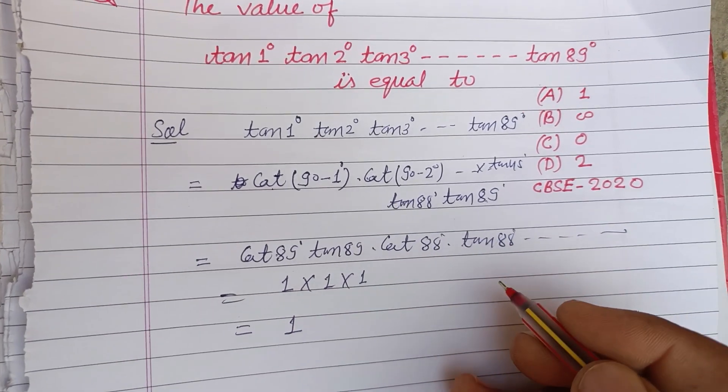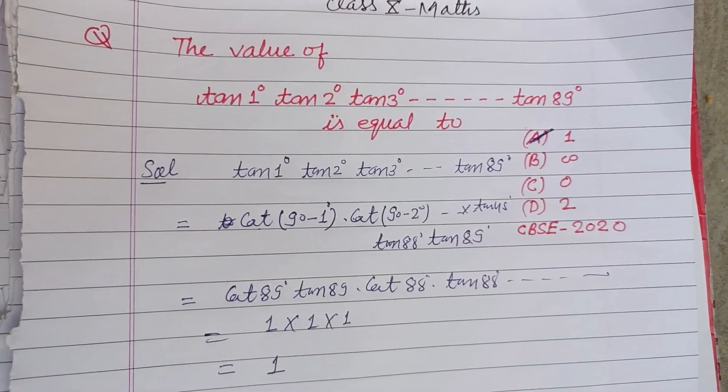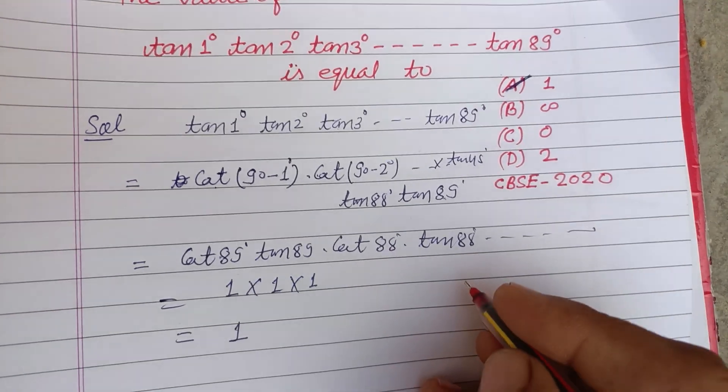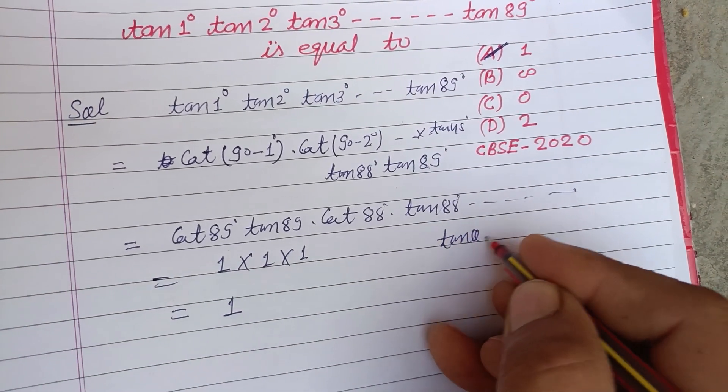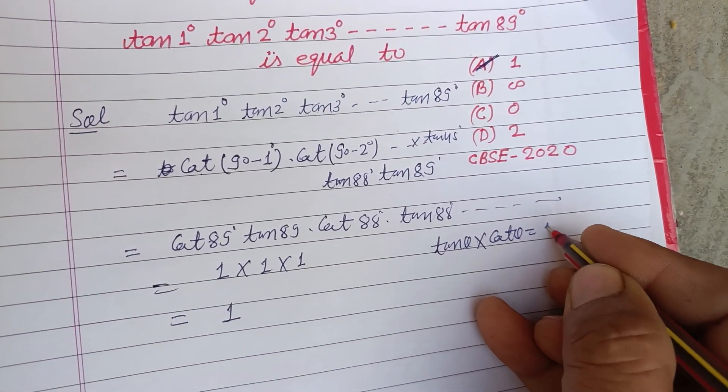1. So the answer to this question is A. I hope you got it. You know that tan θ × cot θ equals 1.